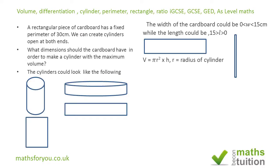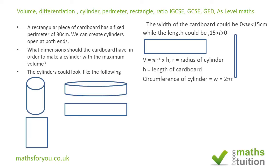This is where the calculus method comes in. The volume is V = πr²h, where r is the radius and h is the length of the cardboard. We wish to express r in terms of w by utilizing our knowledge of circumference. The width of the cardboard will be the same as the circumference of the cylinder, and the circumference is 2πr, so r = w / 2π.